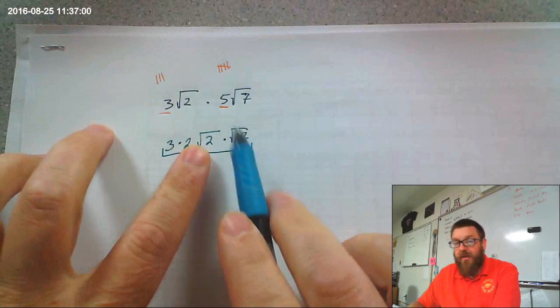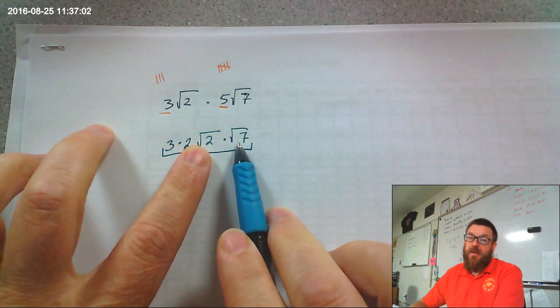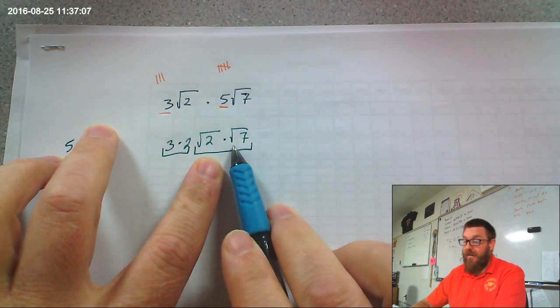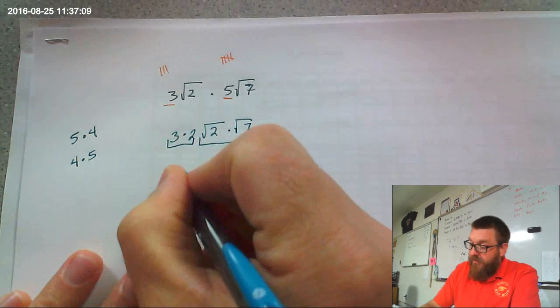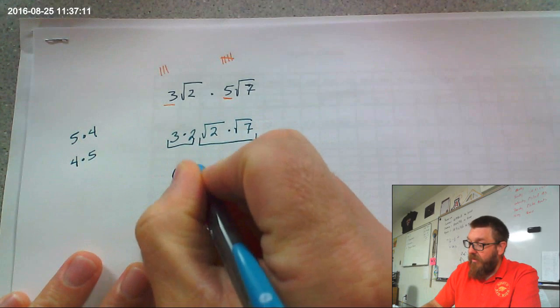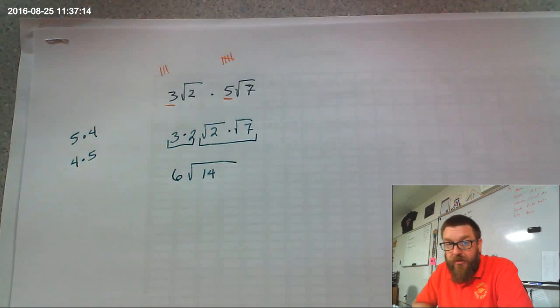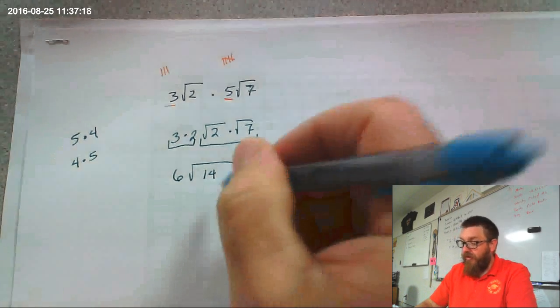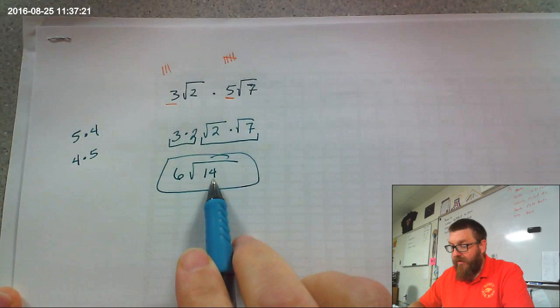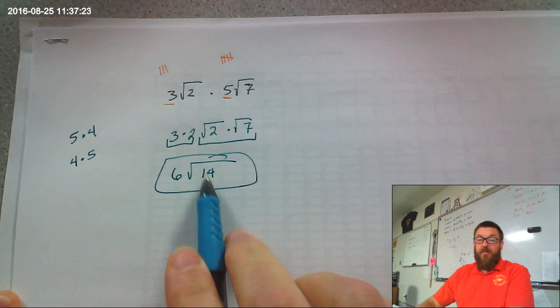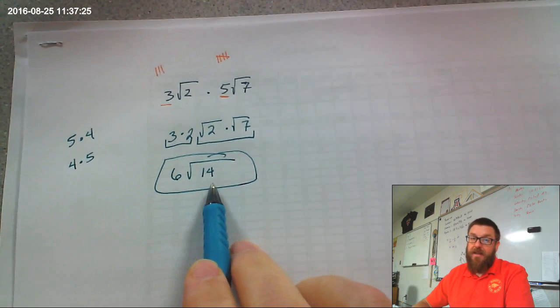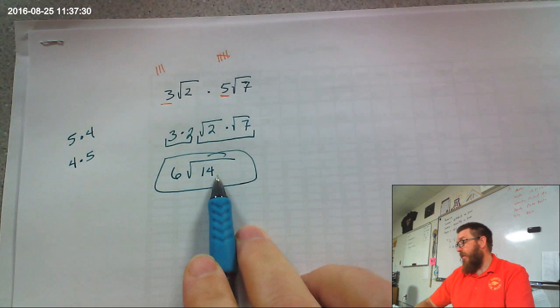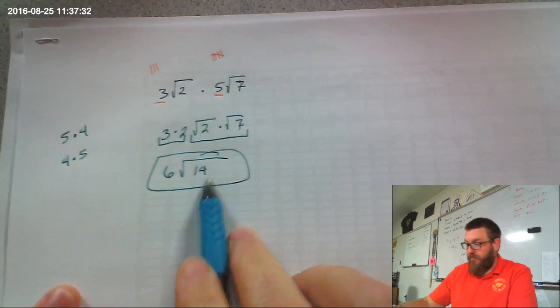Now, the reason we can multiply these two things together actually has to do with exponents and order of operations and stuff we're not going to get into here. So, you'll just have to take my word for it for now. 3 times 2 is 6. The square root of 2 times the square root of 7 is the square root of 14. Now, before you say this is your final answer, you need to take a look at that square root of 14. And if 14 itself, if the radicand has a factor that's a perfect square, it can be simplified and it needs to be. Otherwise, you won't get full credit.